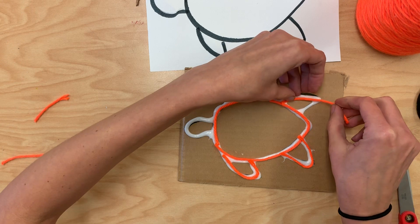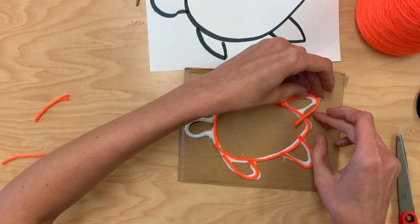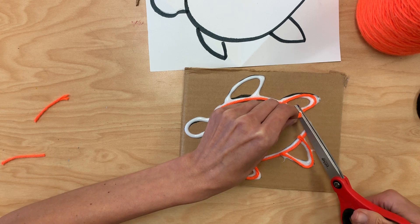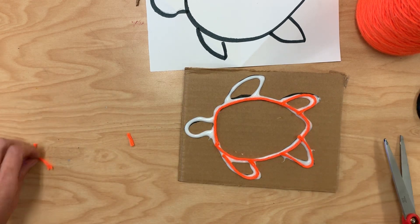And if I make it just a little bit too long like I did here, I can always trim it. I do want to keep it on the glue.